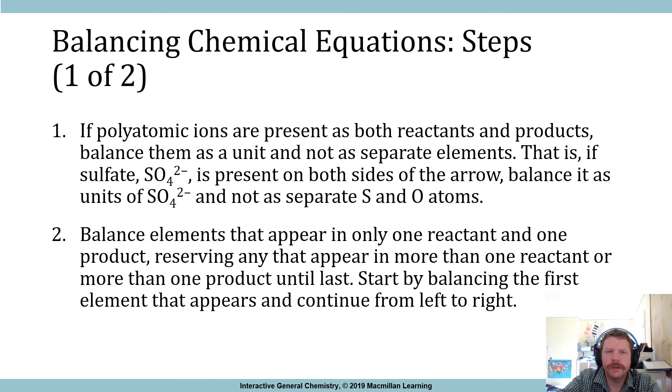Now the next item is your steps. So balancing chemical equations, the steps. If a polyatomic ion is present as both reactants and products, balance them as a unit, not as separate elements. That is, if sulfate, SO4 2-, is present on both sides of the arrow, balance that as units of sulfate, not as separate sulfur and oxygen. That's just going to save you some of the stress of balancing them, because you know that you can kind of look at SO4 as one entity. If there is one SO4 2- on the reactant side, lo and behold, there's going to be one SO4 2- on the product side. So you really don't have to worry about balancing those, or if you balance those coefficients, you've balanced the sulfurs and the oxygens that each of these molecules contributes.